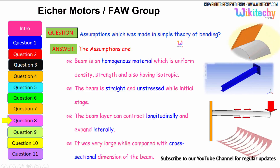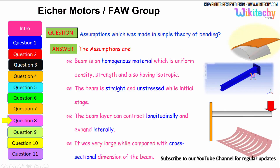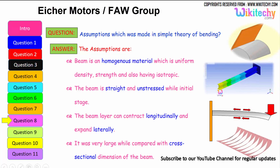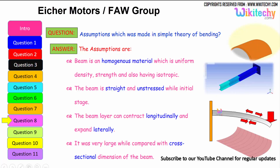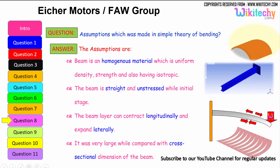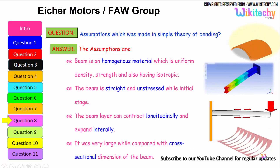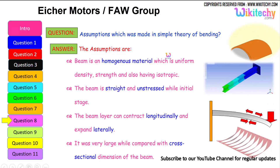What is the assumption which was made in the simple theory of bending? The assumptions are: the beam is a homogeneous material with uniform density, strength, and also isotropic. The beam is straight and unstressed at the initial stage — that is the second assumption. The beam can contract longitudinally and expand laterally. The beam length should be very large when compared with the cross-sectional dimension of the beam. These are some of the assumptions we have to consider for the theory of bending.